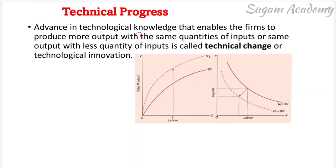We can say there is technical progress when: with the same inputs, more output can be produced; or the same output can be produced with less input. Advances in technological knowledge that enable firms to produce more output with the same quantity of inputs, or the same output with less quantity of inputs, is called technical change, technological innovation, or technological progress.